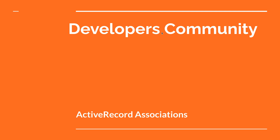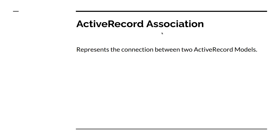So what is an active record association? Active record association represents the connection between two active record models. These are crucial aspects of the active record pattern in the Ruby on Rails framework. They allow you to define relationships between two models in an object-oriented manner, making it easier to query and manipulate data in the database. Active record associations provide a way to express relationships such as one-to-one, one-to-many, and many-to-many between different models. These associations are defined using special methods and macros provided by the active record framework.